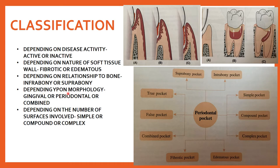The fourth classification is depending upon the morphology — it can be gingival, periodontal, or a combination of both. Gingival is also known as false, pseudo, or a relative pocket; periodontal is known as a true or absolute pocket. Gingival pocket is formed by gingival enlargement with coronal movement of the gingival margins. In periodontal pocket, there is destruction of the supporting periodontal tissue, whereas gingival pocket involves gingival enlargement without destruction of the underlying tissue.